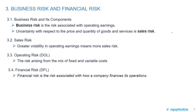Business risk and financial risk — these are important definitions to memorize. Business risk is the risk associated with operating earnings — operating earnings is the key word. Uncertainty with respect to the price and quantity of goods and services is the sales risk. Business risk relates to operating earnings; sales risk relates to the price and quantity of goods and services. Greater volatility in operating earnings means more sales risk. Operating risk, or the degree of operating leverage, is the risk arising from the mix of fixed and variable costs.